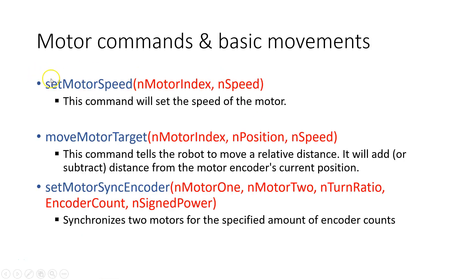The first one is called setMotorSpeed, which accepts two arguments. The first one is your motor index — either motor A, B, C, or D. And the second argument is your motor speed, which ranges from negative 100 to positive 100.